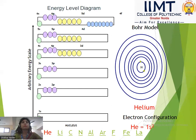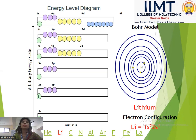Next we have helium. Helium has atomic number 2, so 2 electrons go into the 1s subshell. Next is lithium with atomic number 3: 2 electrons in 1s and 1 electron in 2s, totaling 3.